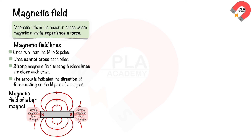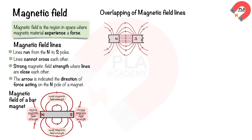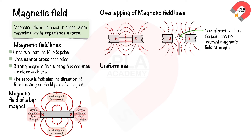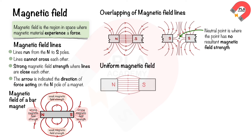Magnetic field lines are far apart further from the magnet. The field line pattern around two magnets with opposite poles shows attraction, while two magnets with same poles show a neutral point — which has no magnetic field strength and no magnetic force acting on magnetic material. A uniform magnetic field exists between two opposite poles.